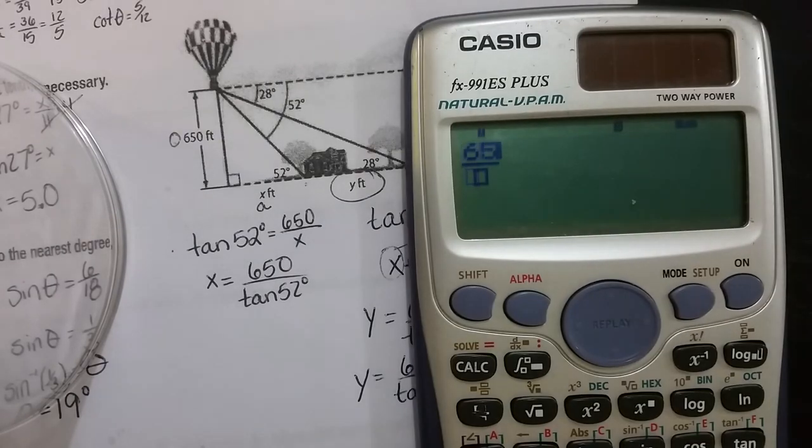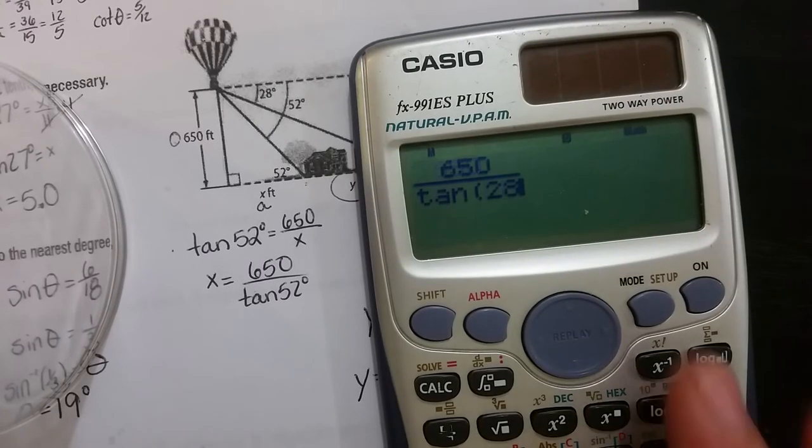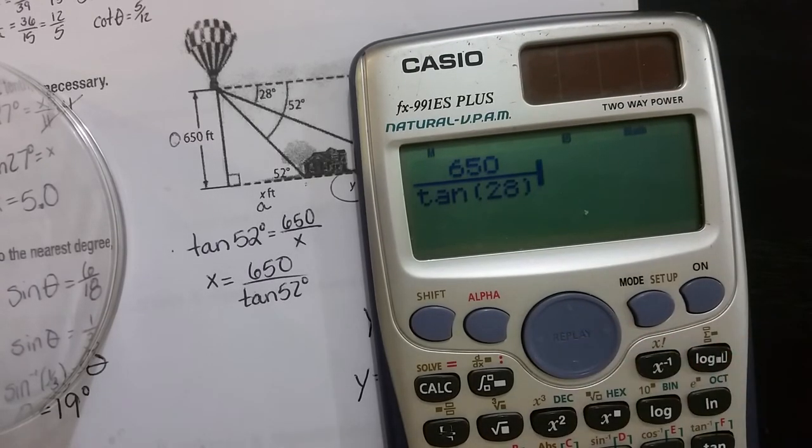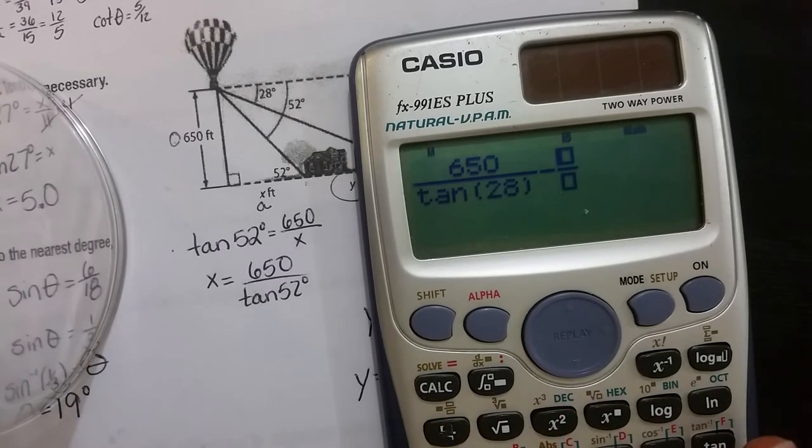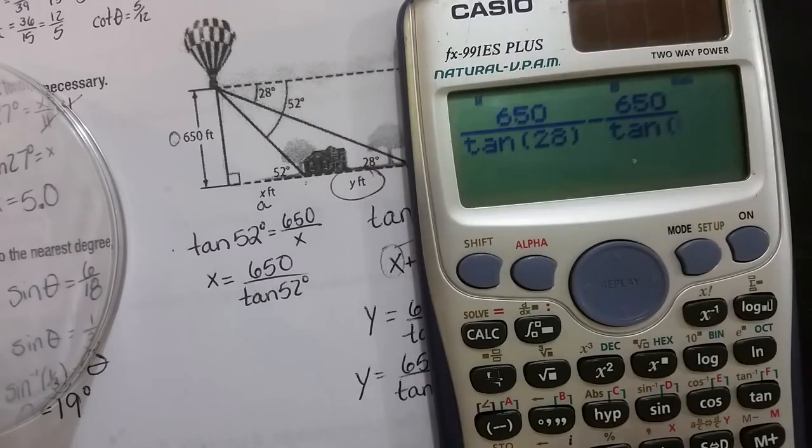So for the fraction, 650 over tan 28, close the brackets, minus new fraction 650 over tan 52. Again, make sure your calculator's already in degrees.